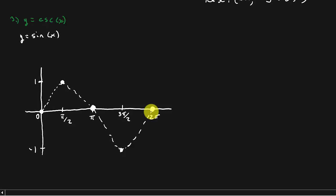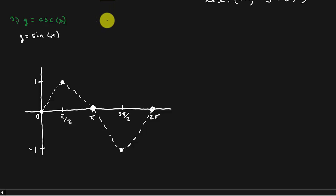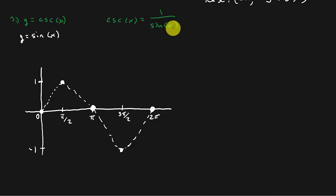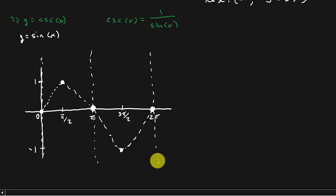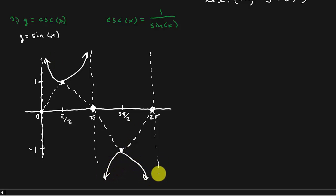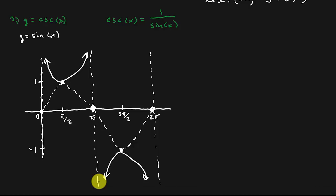Now draw in the vertical asymptotes. Remember, cosecant x = 1/sin(x), so we have vertical asymptotes where sine is 0. Sine is 0 at x = 0, π, and 2π. So the y-axis is a vertical asymptote, and we have asymptotes at π and 2π. Then sketch in the cosecant function. If you can graph sine and cosine, secant and cosecant are a piece of cake.